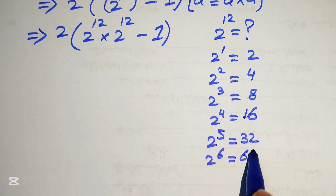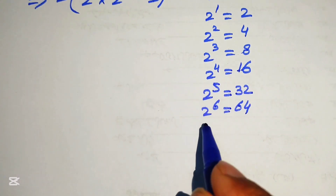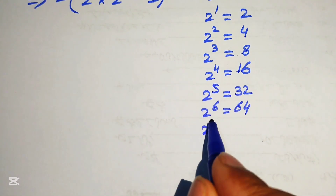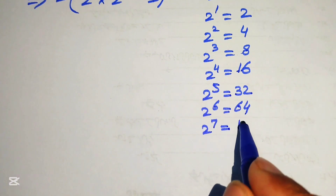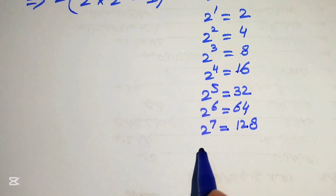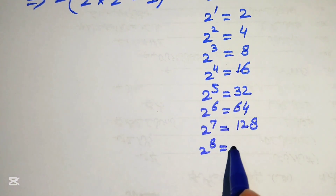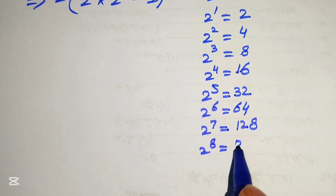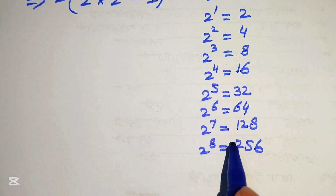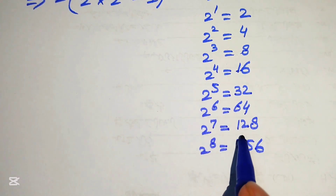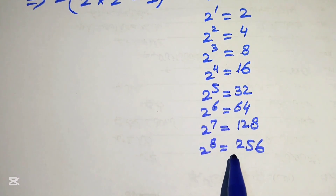Continuing: 2 to the power of 7 equals 128. We simply multiply the previous number by 2 each time.